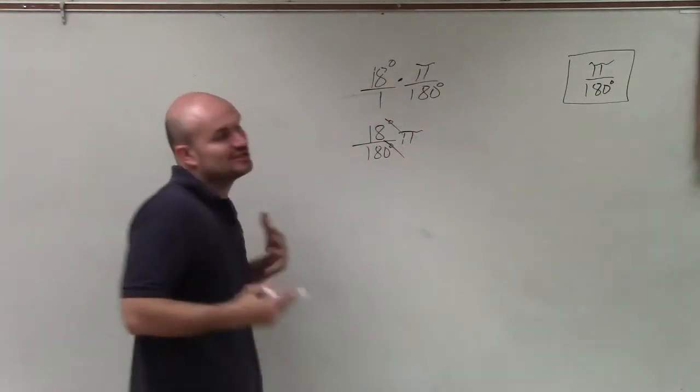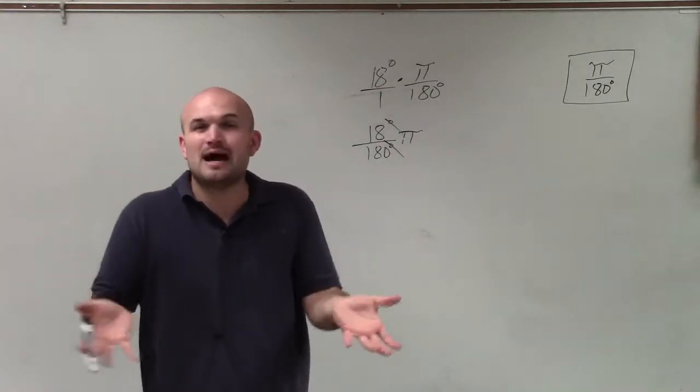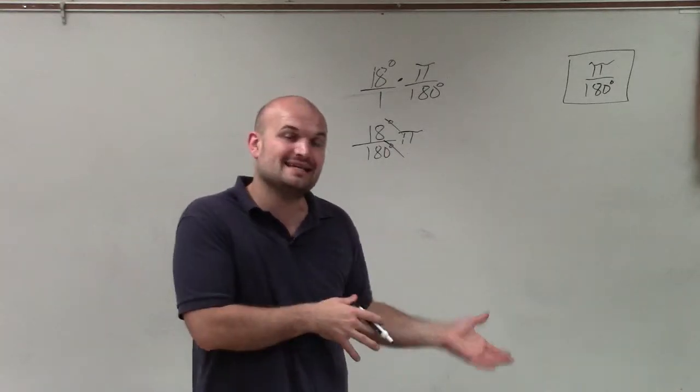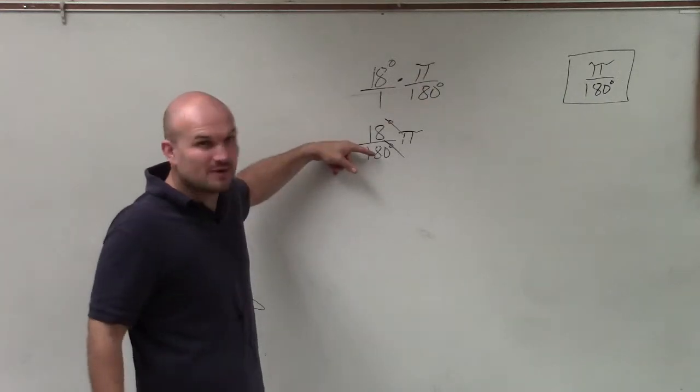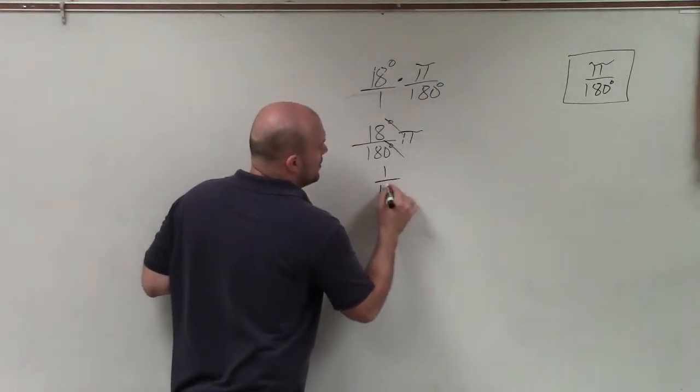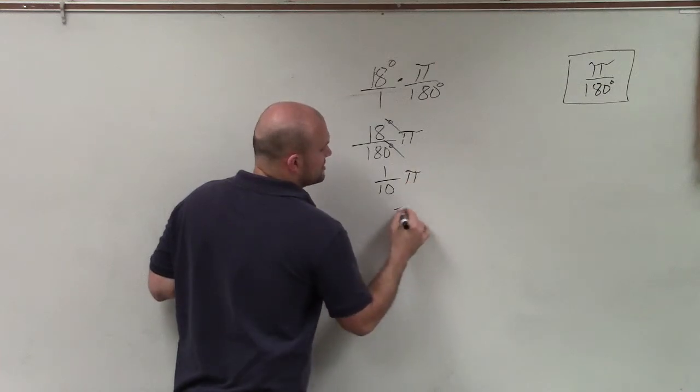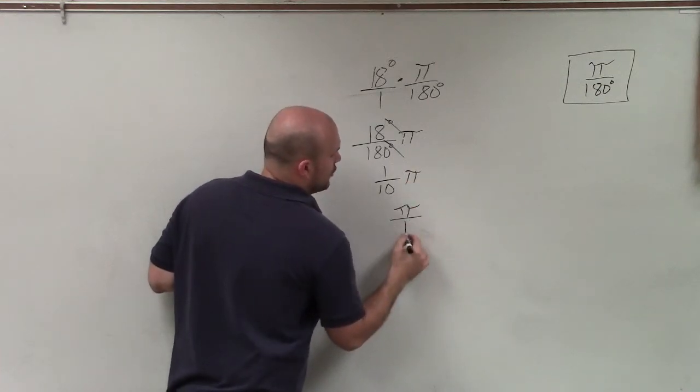Now I need to reduce 18 over 180. Do they have any common numbers that divide both into 18 and both into 180? Well, I can see that 18 times 10 is 180, so I can actually reduce this to 1 tenth times pi, which is commonly written as pi over 10.